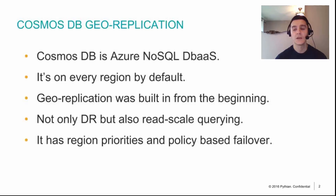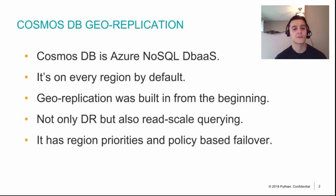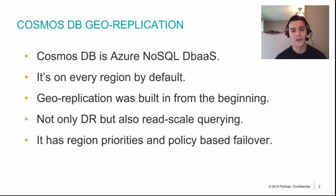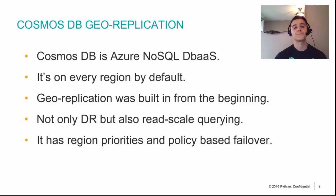For example, I can have my primary database on the East Coast of the US and geo-replicate it all the way to the data centers in Ireland. Or I can have my primary in Tokyo and geo-replicate it all the way to a West Coast US data center — really long distances.